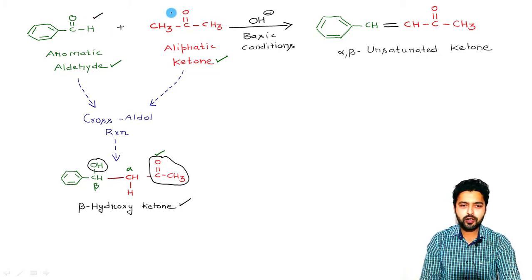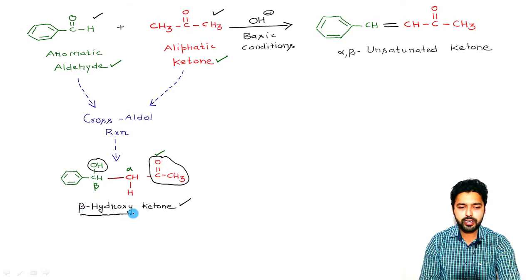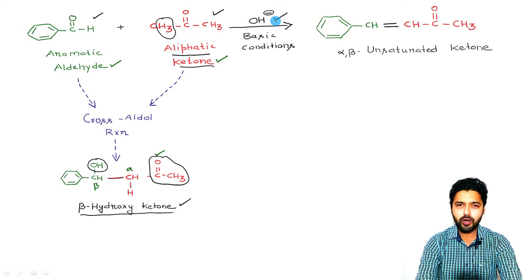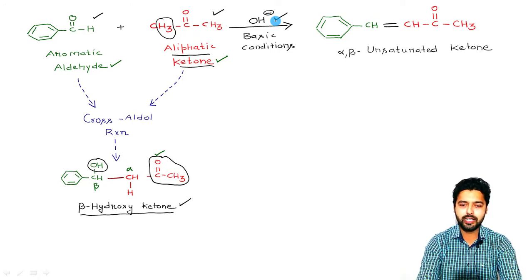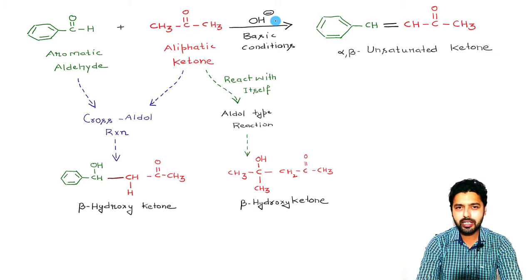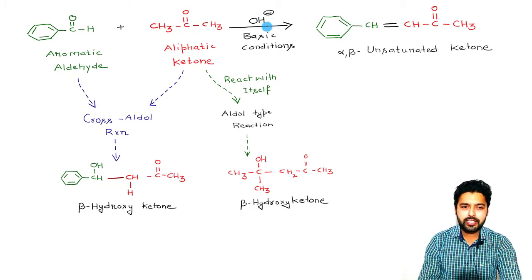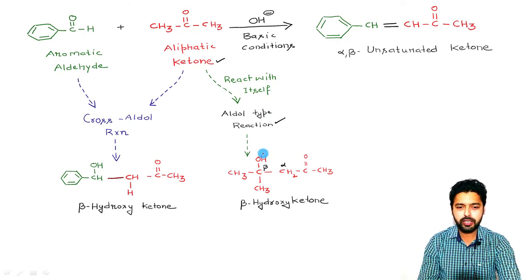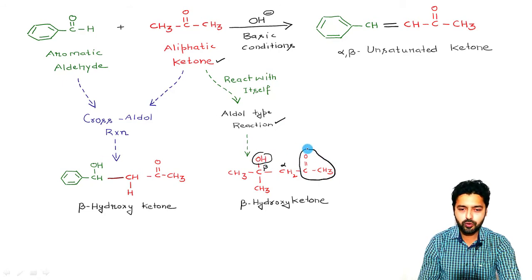To see how the reaction of this aromatic aldehyde and aliphatic ketone gives this alpha-beta unsaturated ketone molecule, we follow a similar pathway. First, this will undergo a cross-aldol type of reaction with this aliphatic ketone molecule. The result will be: this is the carbonyl, this is the alpha position, this is the beta position, and on the beta position we are having a hydroxyl group — so this is a beta-hydroxy ketone. At the same time, because this aliphatic ketone molecule contains alpha hydrogens and conditions are basic, there is also a possibility that this aliphatic ketone molecule can undergo reaction with itself — an aldol type of reaction. This ketone molecule will undergo self-condensation, giving a different beta-hydroxy ketone.